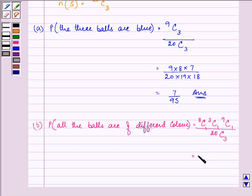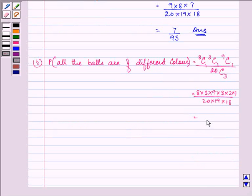So, we have the answer as 8 into 3 into 9 into 3 into 2 into 1 upon 20 into 19 into 18 which is further equal to 18 upon 95. So, this is the answer to this last and final part of this question.